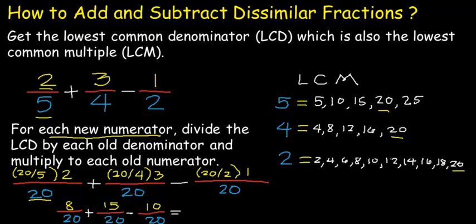We are now just going to add and subtract similar fractions — this is now very easy. 8 plus 15 is 23, minus 10 is 13. Copy our denominator, which is 20. Therefore, our final answer is 13 over 20.